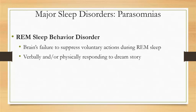Because the brain doesn't suppress these voluntary actions, the person may punch, kick, yell, swear, gesture, jump out of bed, crawl on the floor, or even run. In the process, they may grab, hit, or choke their bed partner, and also charge forcefully into bedroom furniture or perhaps crash through a window. Serious physical injuries to the dreamer or partner may require medical attention, which is often how this disorder is first diagnosed.